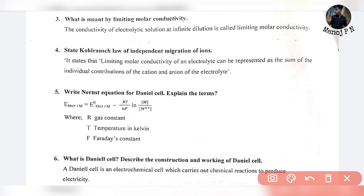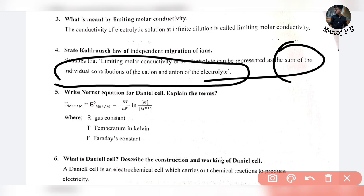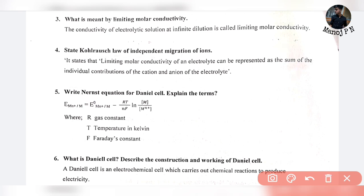State Kohlrausch's law of independent migration of ions. Simple. It states that limiting molar conductivity of an electrolyte can be represented as the sum of the individual contributions of the cation and anion of the electrolyte.